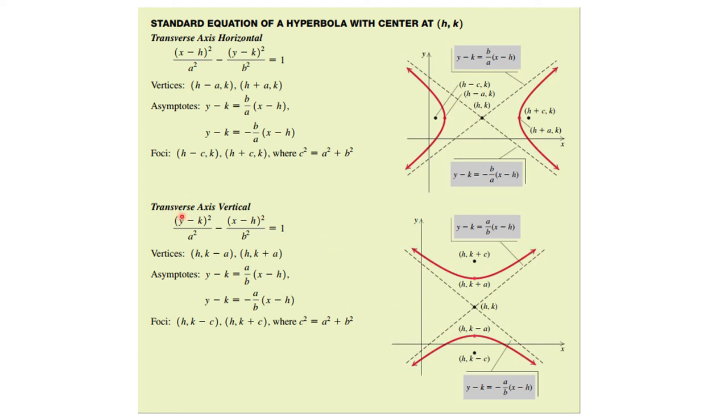Similarly, if we have a transverse vertical axis, we have y minus k whole squared over a squared minus x minus h whole squared over b squared is equal to 1. And c squared still equals a squared plus b squared.